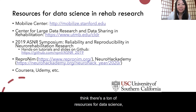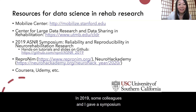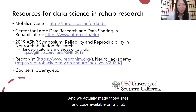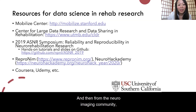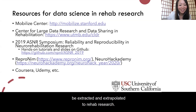In terms of rehab research specifically, there are tons of resources for data science, and this is continuing to grow. There are centers supported by the NIH, for instance the Mobilized Center at Stanford and the Center for Large Data Research and Data Sharing in Rehabilitation. In 2019, some colleagues and I gave a symposium at the American Society for Neurorehabilitation annual meeting on reliability and reproducibility for neurorehab research. We covered the basics of Python, R, and MATLAB for reproducible research, and we made those slides and code available on GitHub — everything is freely available.